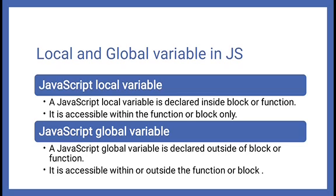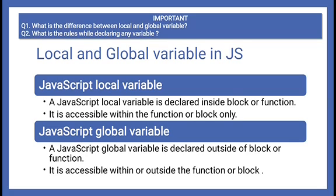There are two types of variables: local variables and global variables — we also saw this in C. Local variables are those declared within a block and can only be used inside that block. Global variables are declared outside a block and can be used both inside and outside any block. The difference between local and global variable — these are the two points. The third point is that local variables have higher preference than global variables.